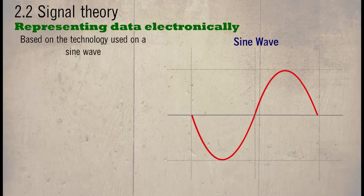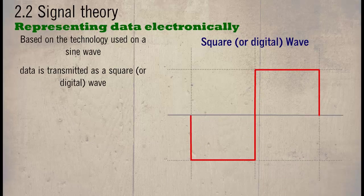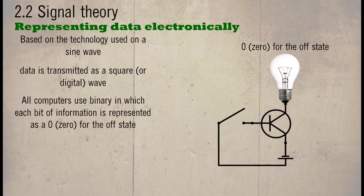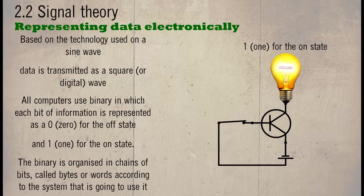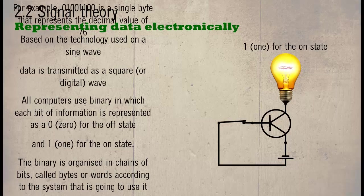Based on the technology used on a sine wave, data is transmitted as a square or digital wave. All computers use binary in which each bit of information is represented as a zero for the off state and a one for the on state. The binary is organized in chains of bits called bytes, or words according to the system that is going to use it.